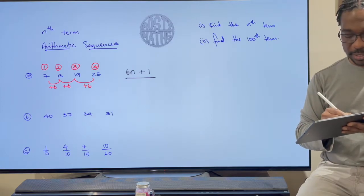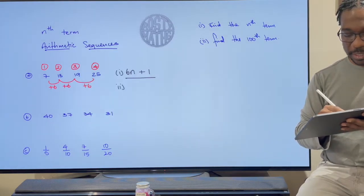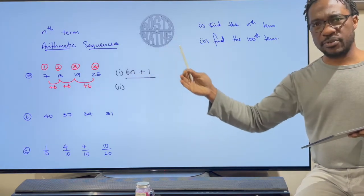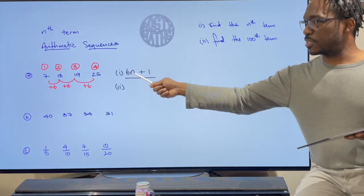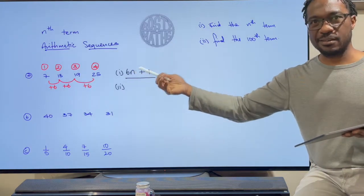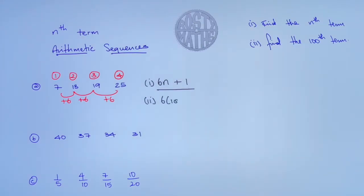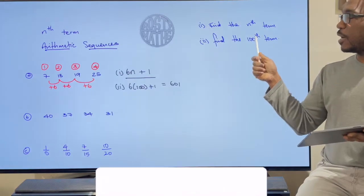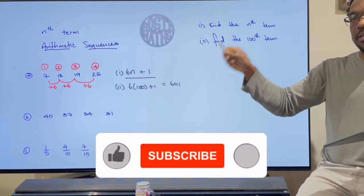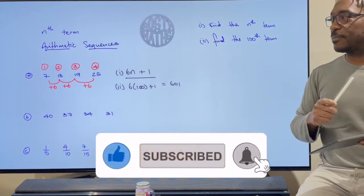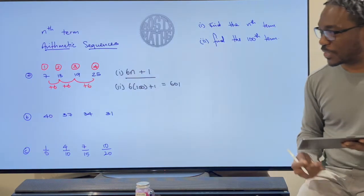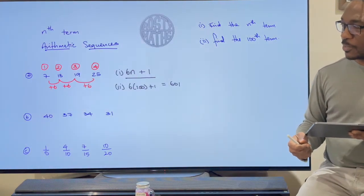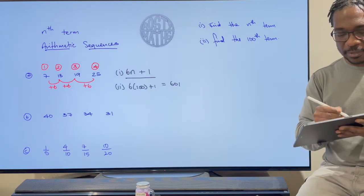Now I need to find the hundredth term. Remember, n represents the position of the number in the sequence, so to find the hundredth term, make n = 100. That's 6 times 100 plus 1, which equals 601. So if you kept carrying that sequence on and on, the hundredth term would be 601.